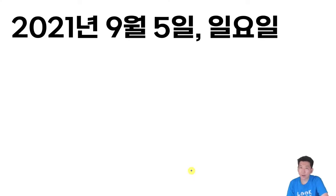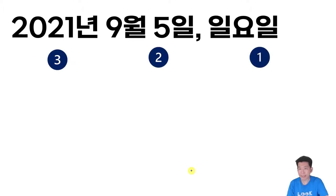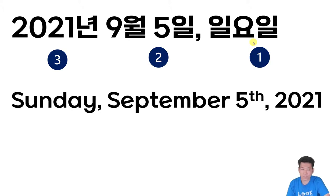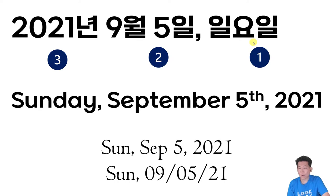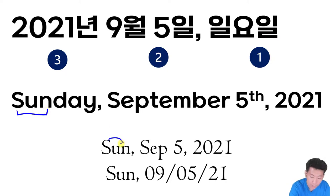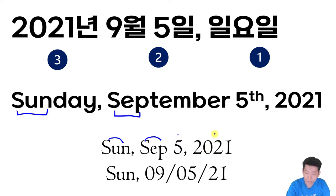2021년 9월 5일, 일요일 어떻게 하면 될까요? 순서를 봤을 때는 작은 거를 먼저 써주는 게 좋습니다. 가장 작은 개념인 일요일이 앞으로 가니까 Sunday가 먼저 나오겠고요. 그 다음에 9월 5일은 September 5th라고 하시면 되겠죠? 그 다음에 2021을 집어넣으면 되겠죠? Sunday, September 5th, 2021. 그리고 요것을 적을 때는 Sunday를 SUN, September를 SEP, 그 다음에 5, 그 다음에 2021을 집어넣으면 되겠습니다.